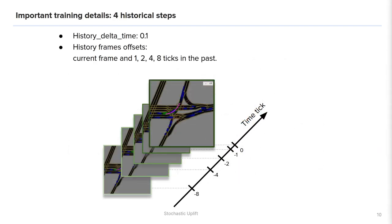We used default rasterization parameters provided by the organizers and produced images of 224 by 224 pixels. The important detail which improved our training efficiency is using a sparse set of four history time steps: one, two, four and eight ticks in the past. We did not notice any improvement of the target metric score when using more history time steps.